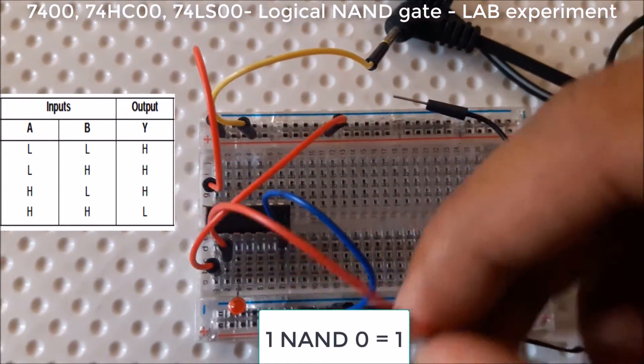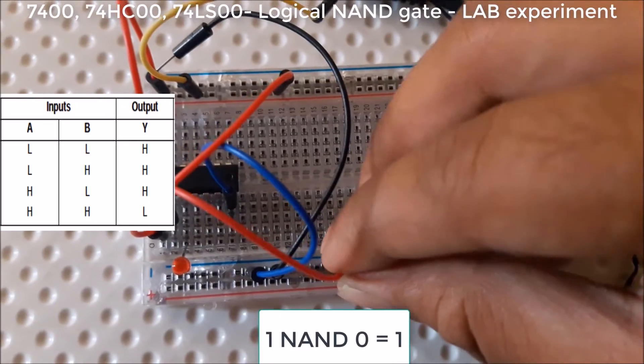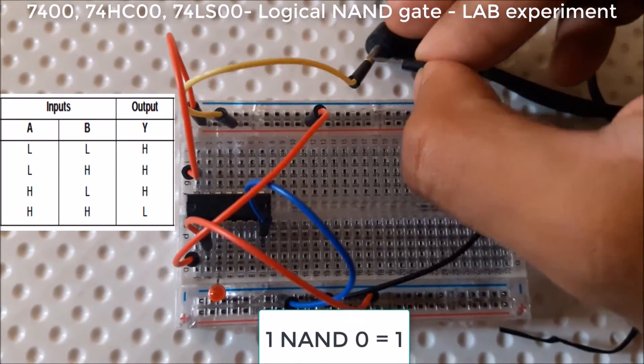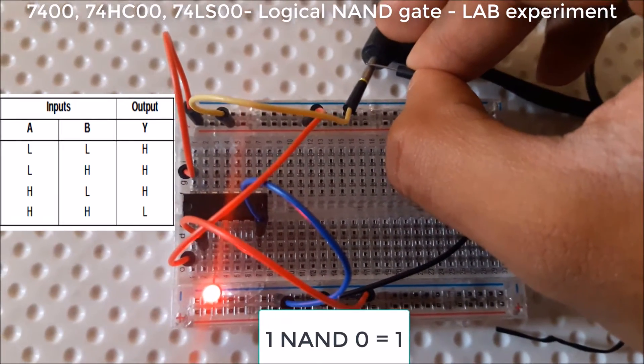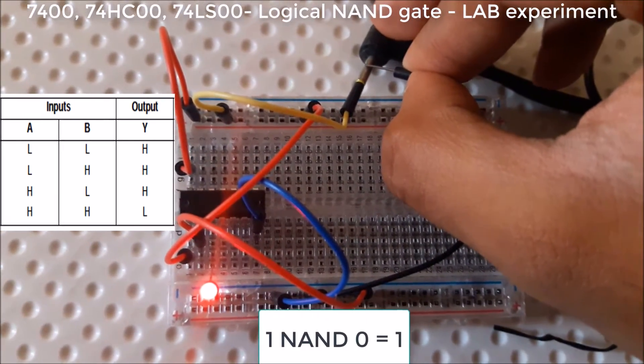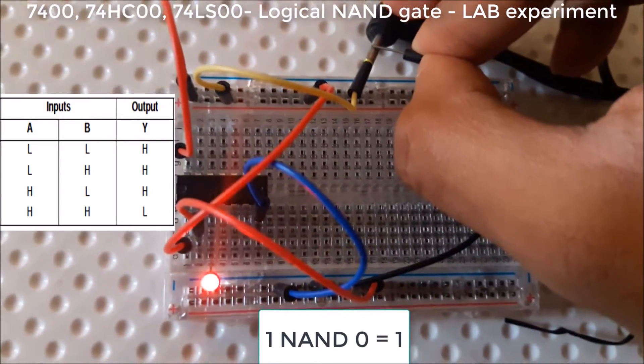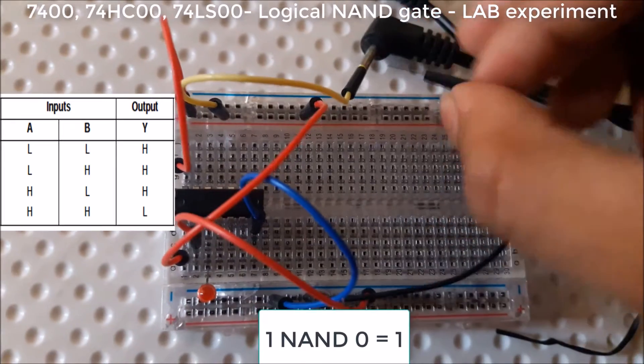If we give 1 and 0, that is one pin for high and one pin for low, then 1 and 0 is giving us 1. For NAND gate, 1 and 0 is giving us 1.